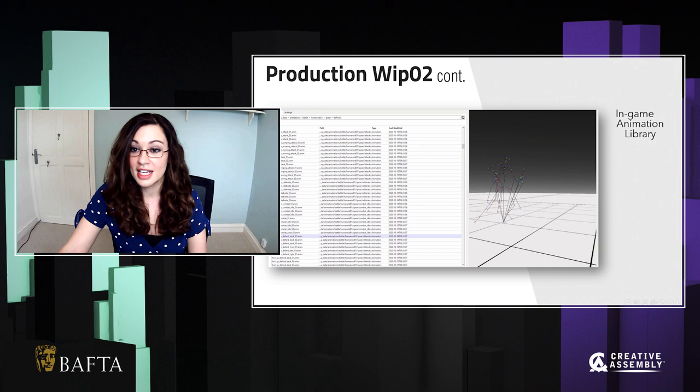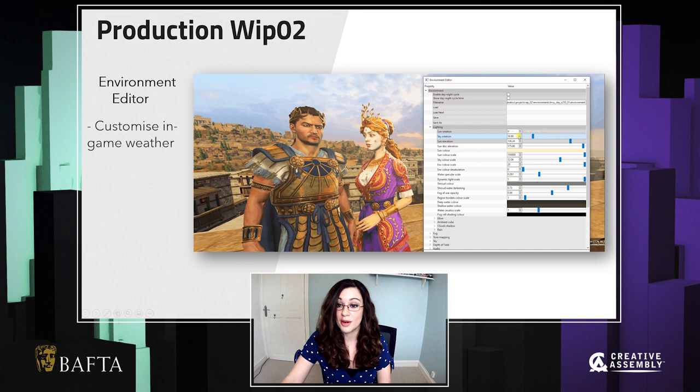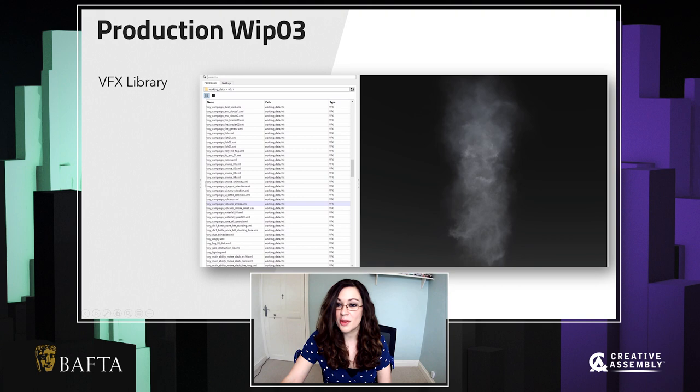When we choose our background animations, we select them from an animation library that shows us all the animations featured within the game. It's the same idea when we adjust our weather and our time of day in Cindy — we do this using a tool called the Environment Editor. What we do is load up pre-existing environments that are already found in the game, and then using a slider system, we adjust them to make our trailers look as cinematic as possible.